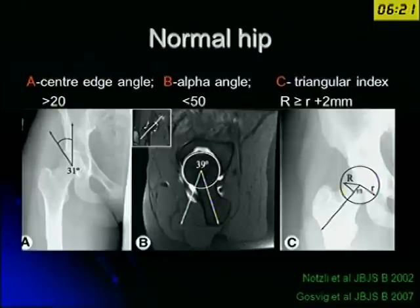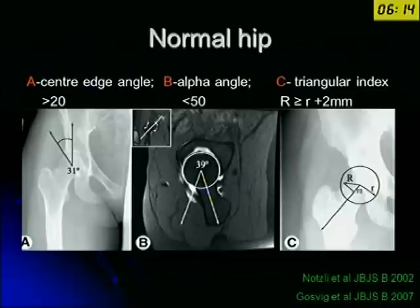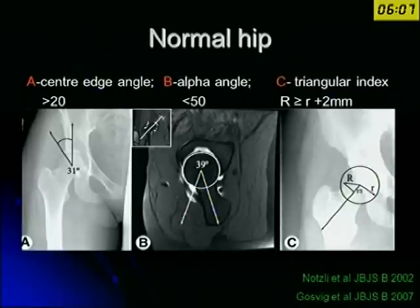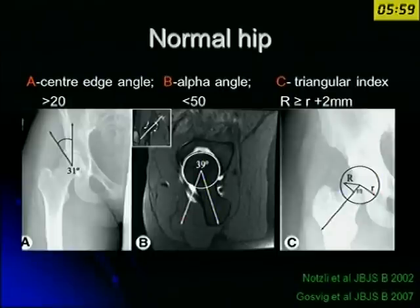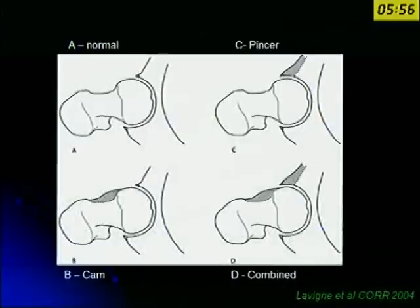The other angle which has been measured is the triangular index, which can be read off a normal X-ray and may be quite useful in the OPD when we initially take only X-rays. They try to find out the radius of the femoral head, draw a triangle, and measure the value of R. That gives some indication of where there is altered anatomy.